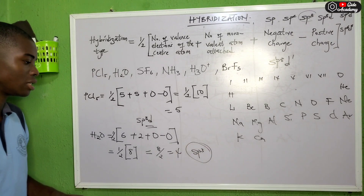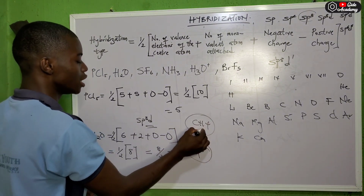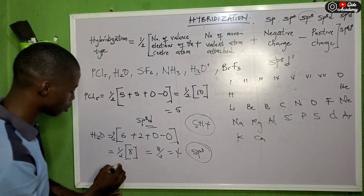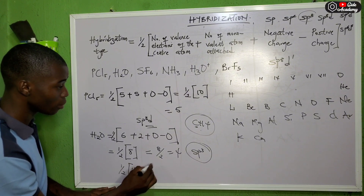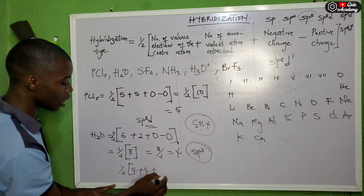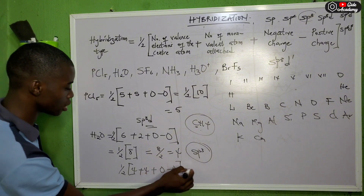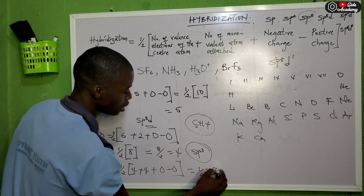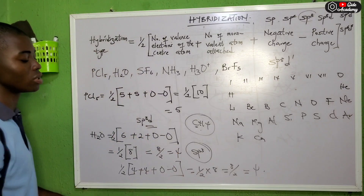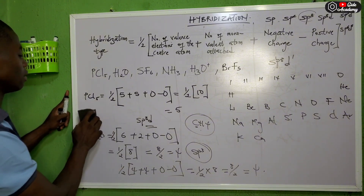For CH4, carbon is the center atom with 4 valence electrons. Four hydrogen atoms are attached. No charge. H = ½ × (4 + 4) = ½ × 8 = 4. So CH4 is sp3 hybridized, which we already know.